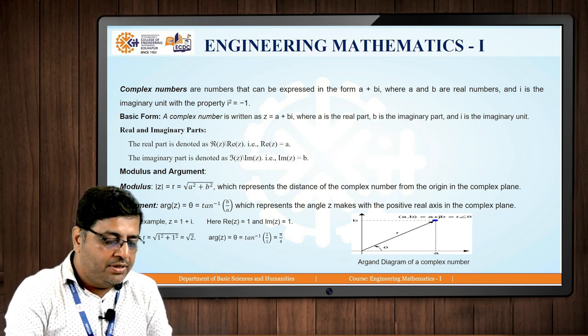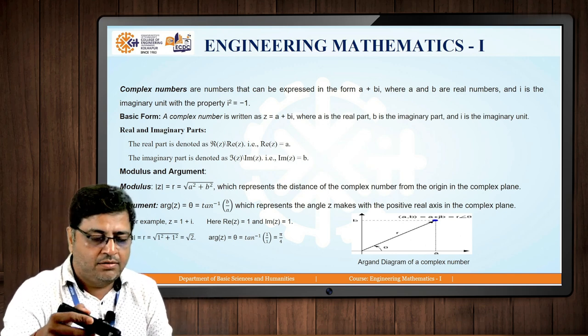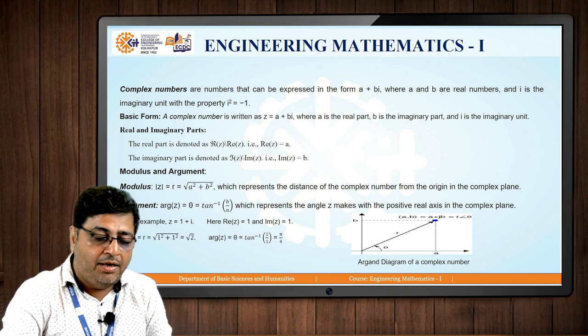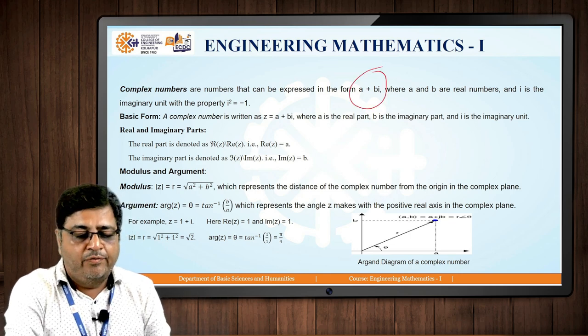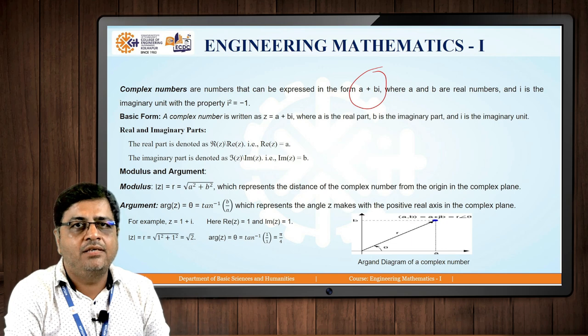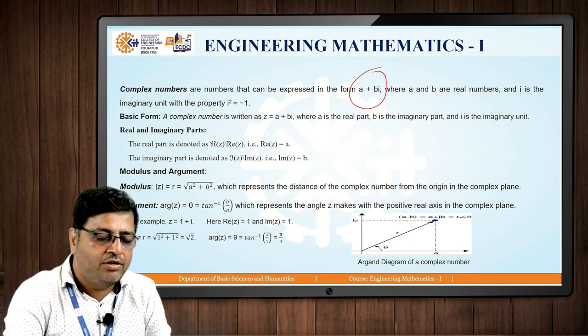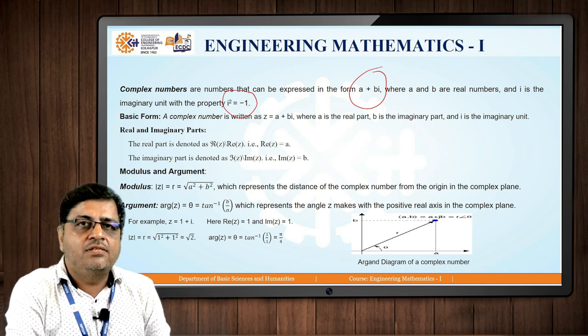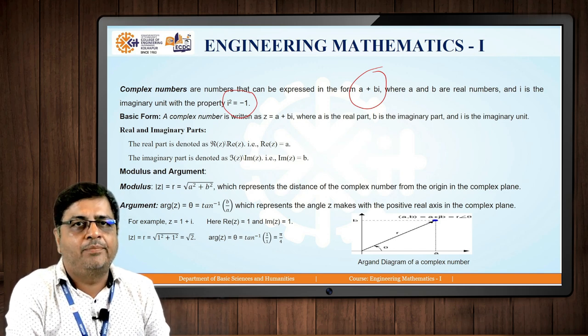Complex numbers are the numbers of the form A plus B I, where A and B are real numbers and I is the imaginary unit with the property I square equal to minus 1. This is the definition of complex number.